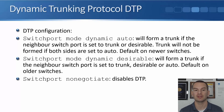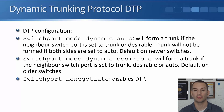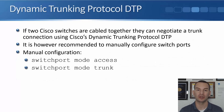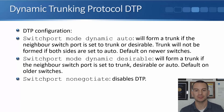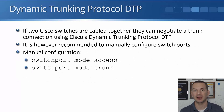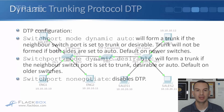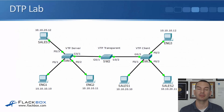The last option is switchport no negotiate, and that disables DTP. So your different options for the switchport mode are: switchport mode access, trunk, dynamic auto, or dynamic desirable. But the recommended approach, as I said earlier, is to use either switchport mode access where your end hosts are plugged in, or switchport mode trunk where you've got another switch plugged in.